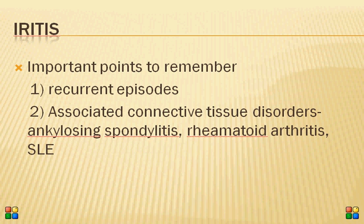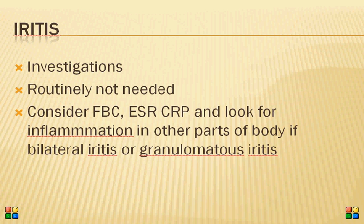Key points about iritis: it can be unilateral or bilateral, and has a history of recurrent episodes. Always ask a patient with a painful red eye whether they have had similar symptoms in the past — a positive history is a clue to iridocyclitis. Associated connective tissue disorders like ankylosing spondylitis and rheumatoid arthritis can be linked to iritis. Routine investigations are not needed for every patient, but in bilateral, granulomatous, or recurrent cases, check inflammatory markers such as ESR, CRP, and full blood count, and consider specific markers for infection or inflammation.